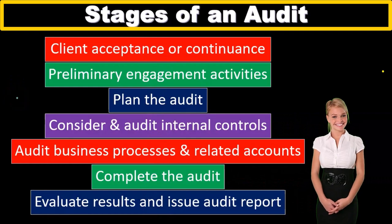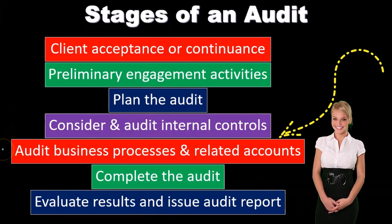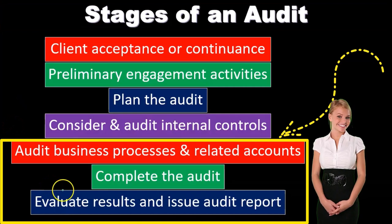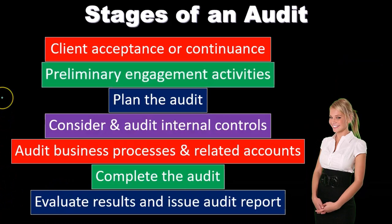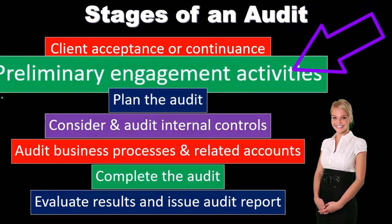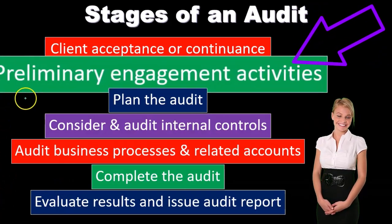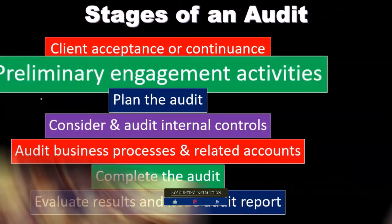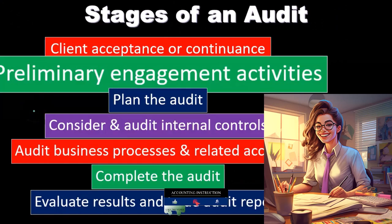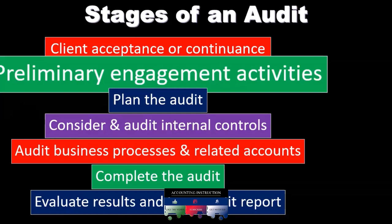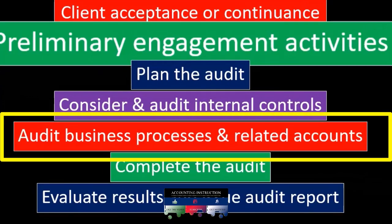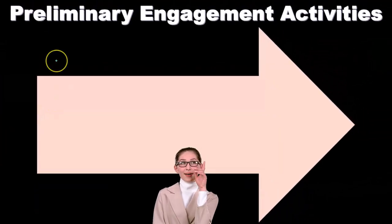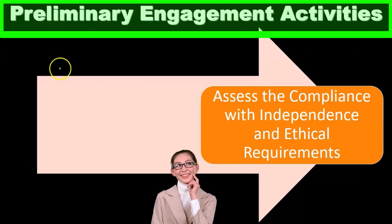The audit stages include: plan the audit, consider and audit internal control, audit business processes and related accounts, complete the audit, then evaluate results and issue the report. We are now focusing in on the preliminary engagement activities — still basically above the planning of the audit section, before we get into auditing internal controls, and finally what most people would consider diving into the actual audit of business processes and related accounts.